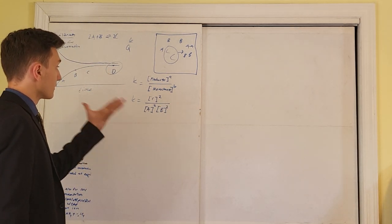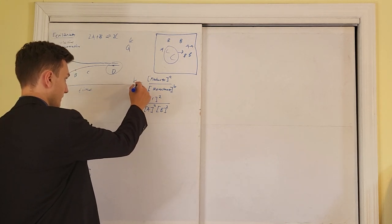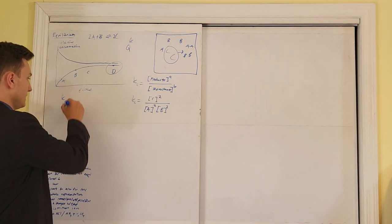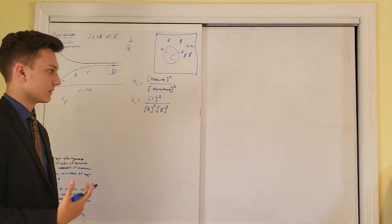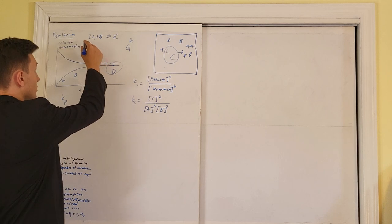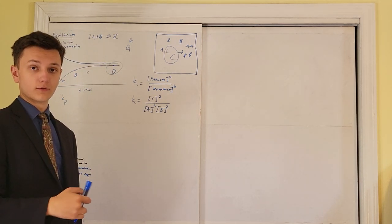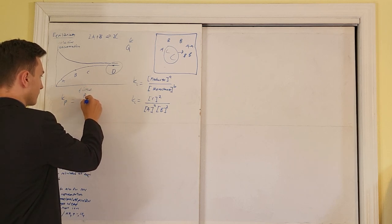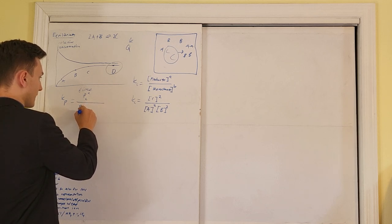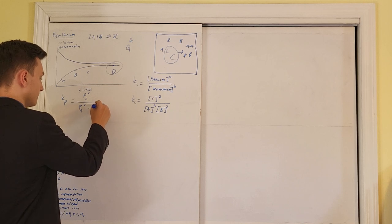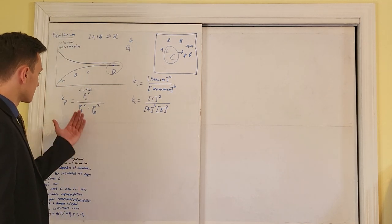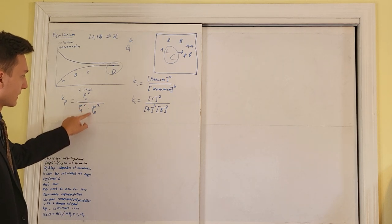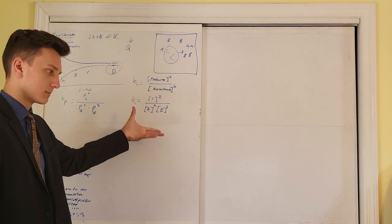There are two types of K. You can have Kc, where C represents concentration, or Kp, where P represents partial pressure. If the species are in the gaseous phase, we use Kp for the partial pressures of reactants and products. The Kp for this reaction would be partial pressure of C squared divided by partial pressure of A squared times partial pressure of B squared — the same general structure, just using partial pressures instead of concentrations.